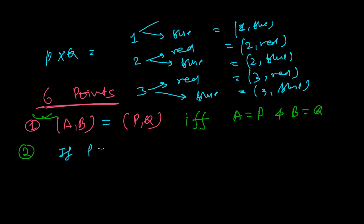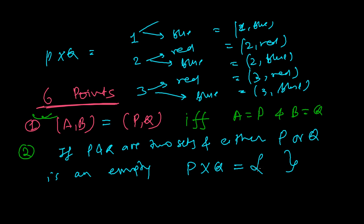Second point: if P and Q are two sets and either P or Q is an empty set, then the Cartesian product P×Q will also have no elements. That will also be an empty set. If either P or Q is an empty set, then the Cartesian product of them will be also an empty set.